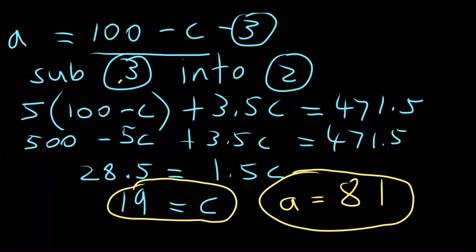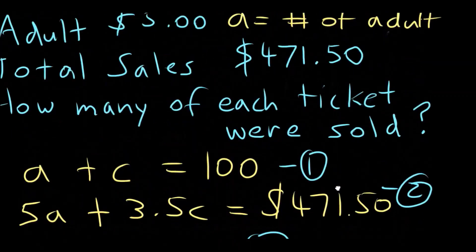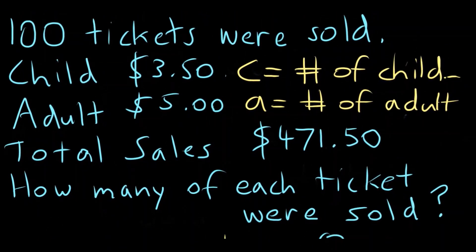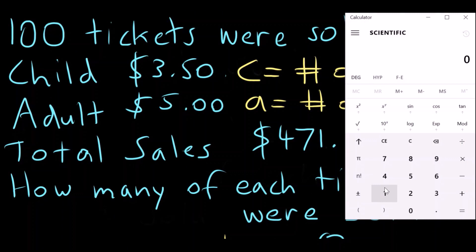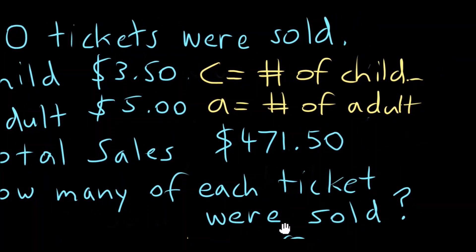Okay, let's check that on the calculator. 19 children, 81 adults. We'll go up to the original problem. So we have 81 adults at $5 each, 81 times 5, plus 19 children at $3.50 each, 19 times $3.50 equals $471.50. And that is the right answer. Yep. There we go.